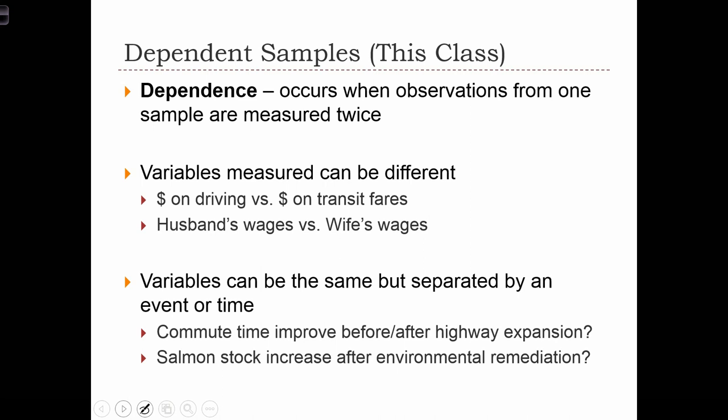But this class we're going to be dealing with dependent samples, when observations in one sample are measured twice. So in this case we can have one observation but measuring two variables about that observation. So if our observation is a household, we might be measuring how much money that household spends on different items, like on different modes of transportation. Or if our observation is a couple, married couples, then maybe we can compare wages for the men and compare that to wages of their wives.